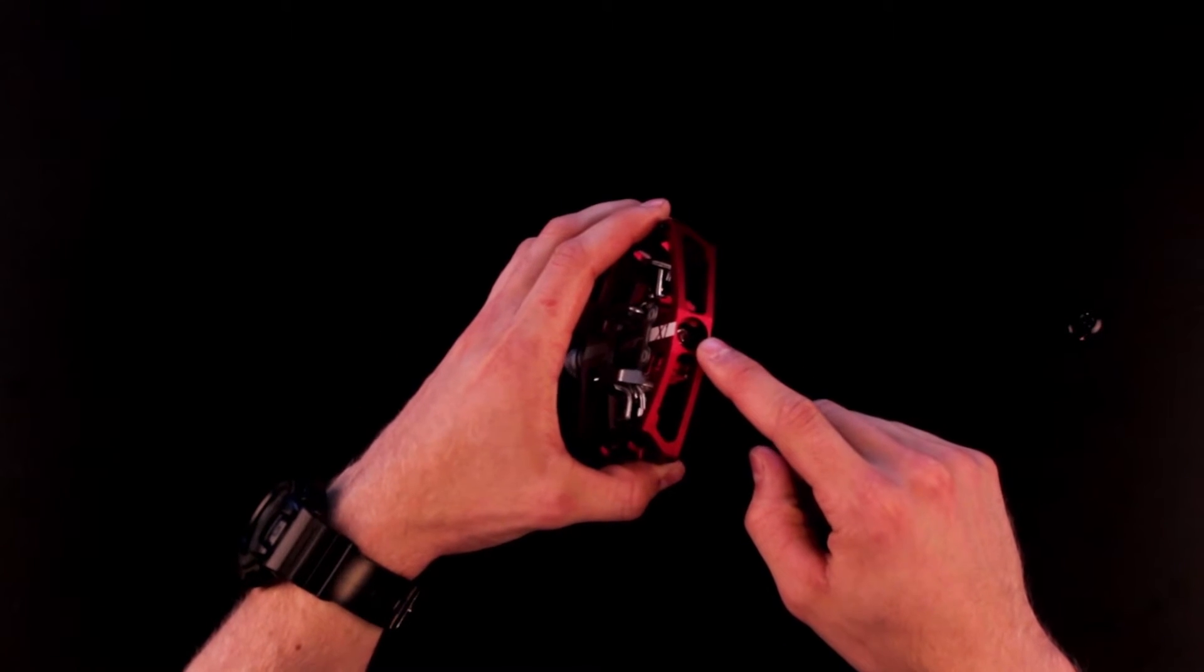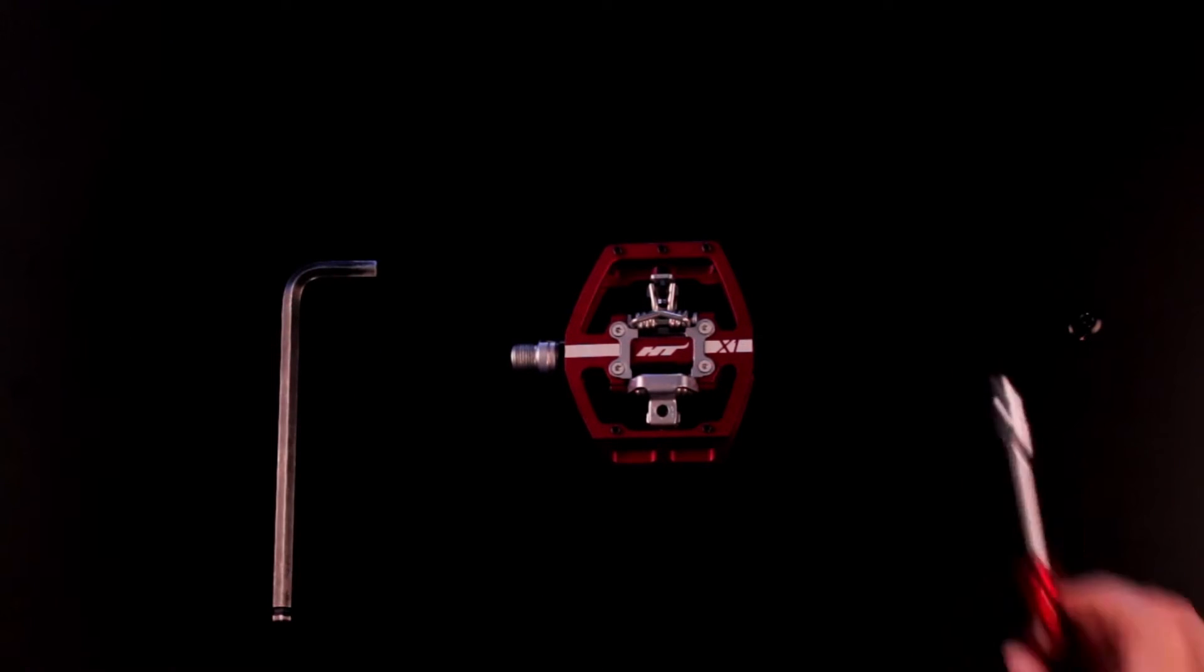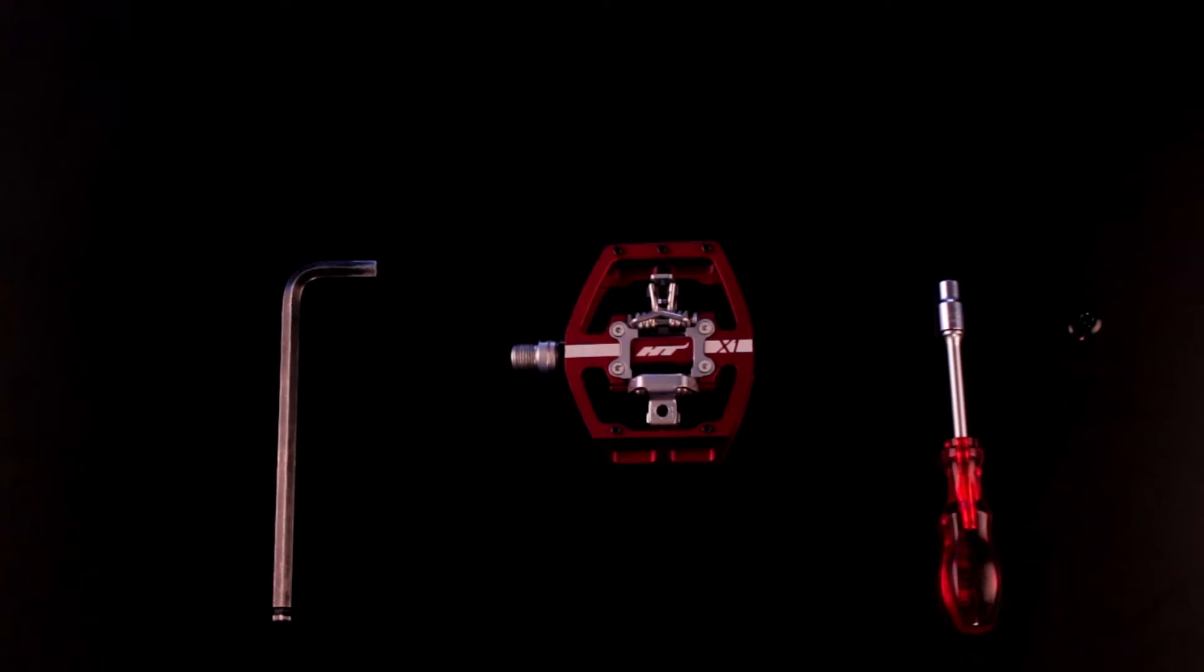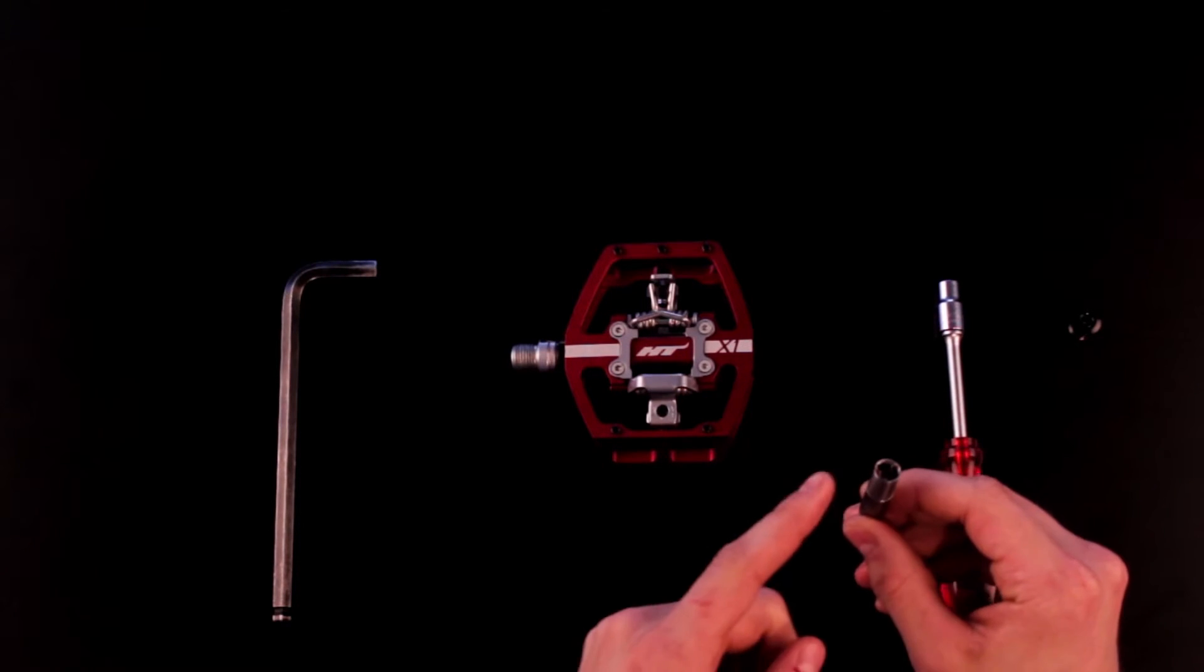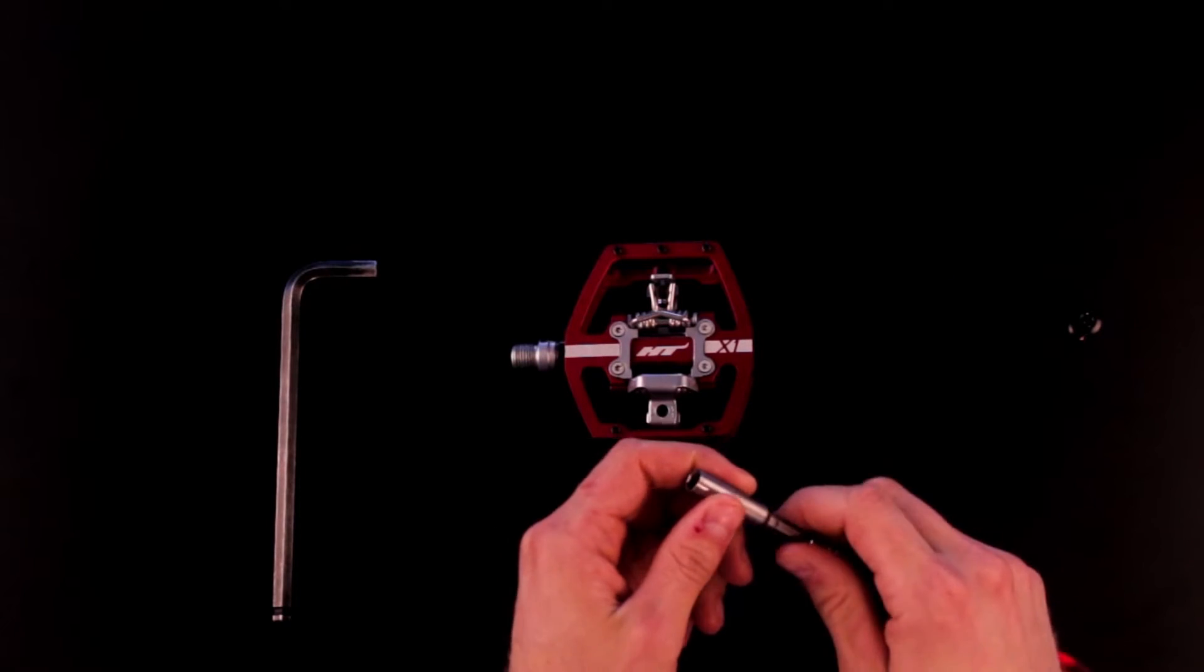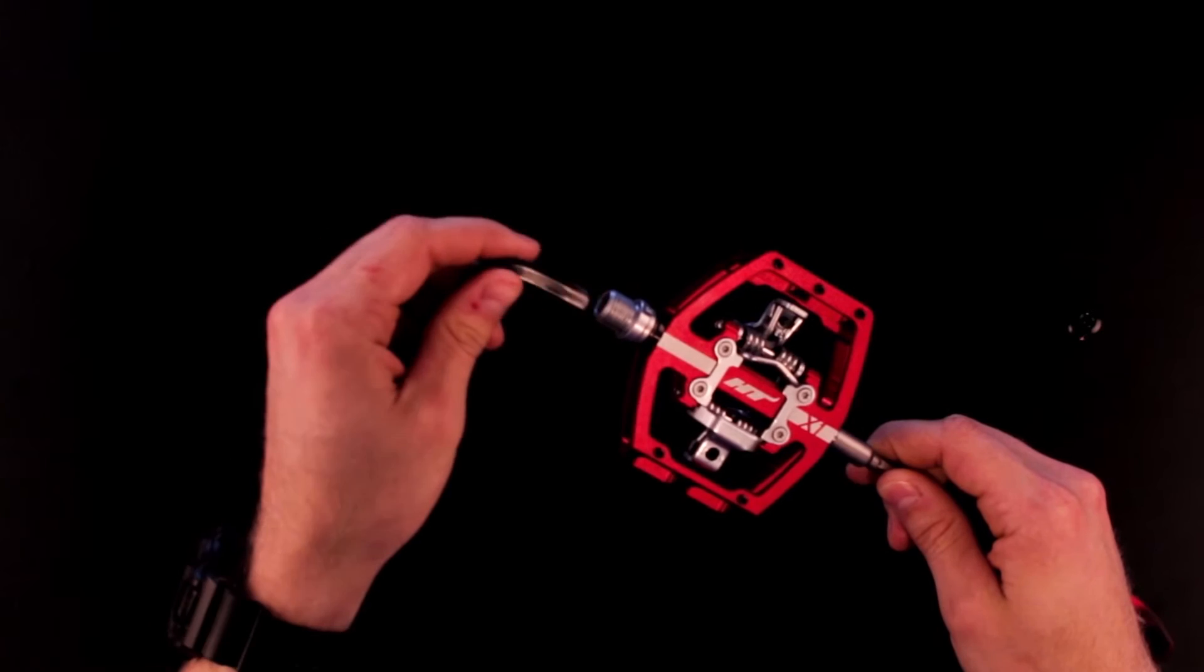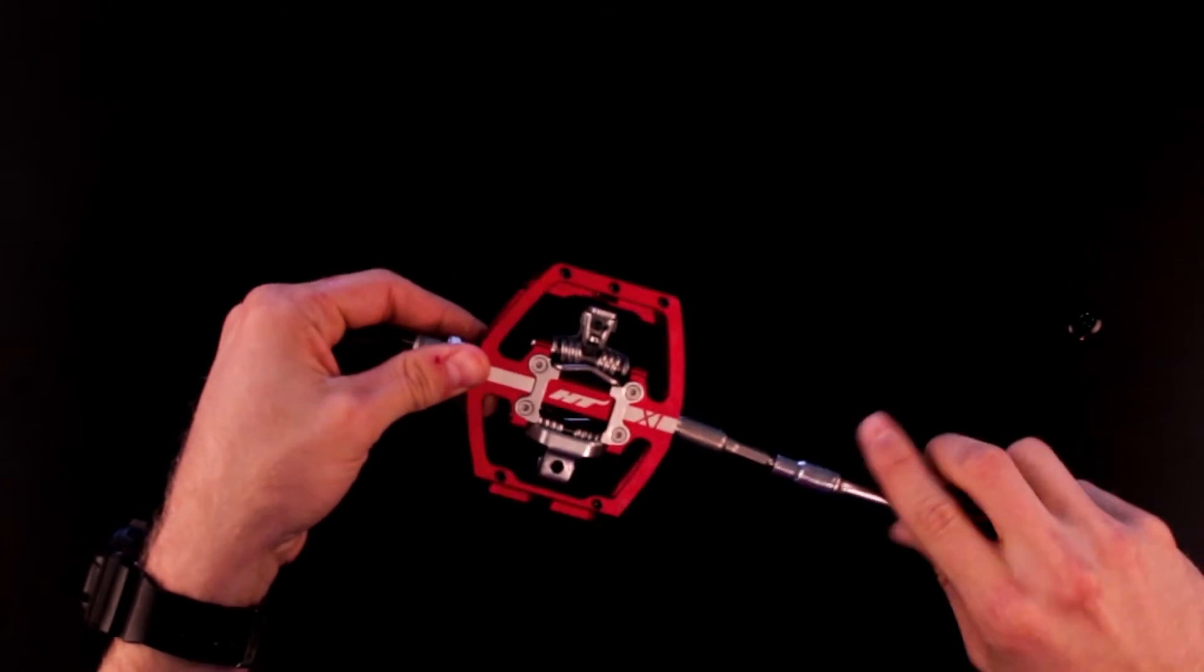Next we need to remove the end nut. To remove the end nut you'll need something to hold the axle still, so an 8mm Allen key and a socket wrench with an 8mm slim head socket—we sell these. Insert the socket into the end and hold the nut captive, then the Allen key to hold the axle still.